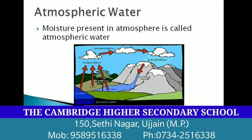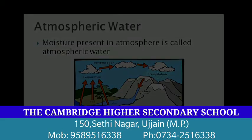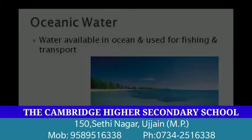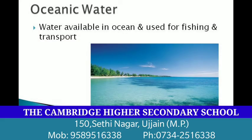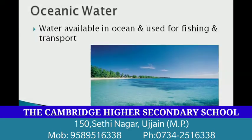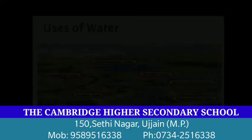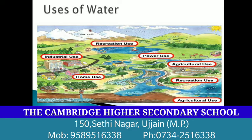Next is atmospheric water. Water from the surface of the earth gets evaporated into the atmosphere. This moisture present in the atmosphere is known as atmospheric water. And the last is oceanic water — water available in oceans, which is mainly used for transport and the fishing industry. So these are the sources of water.